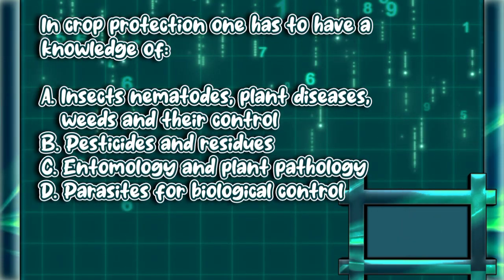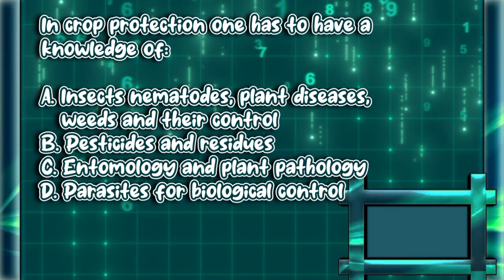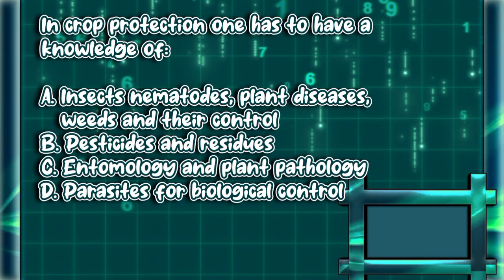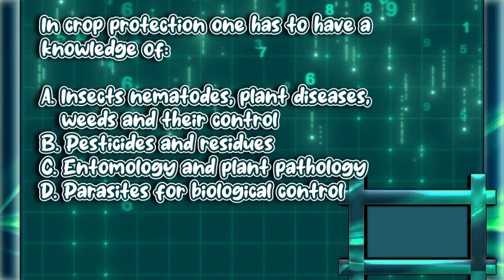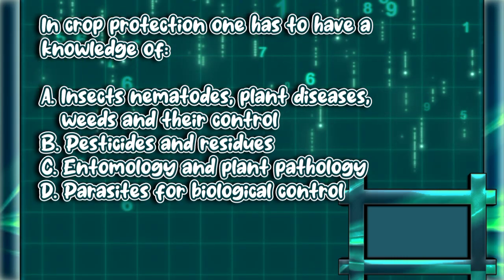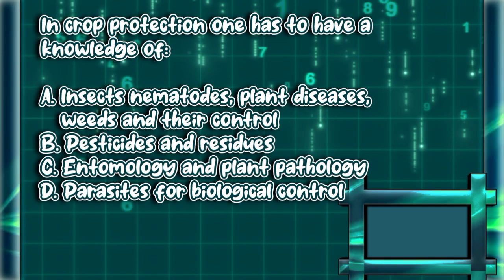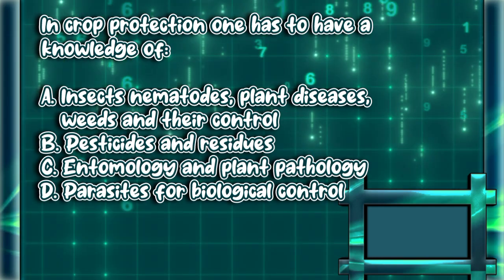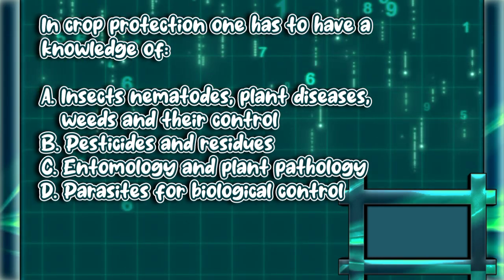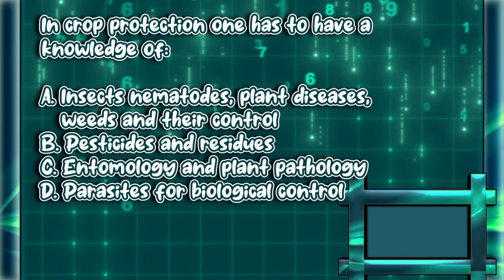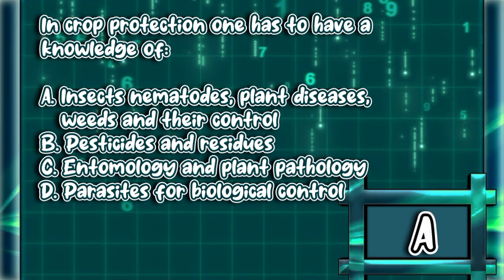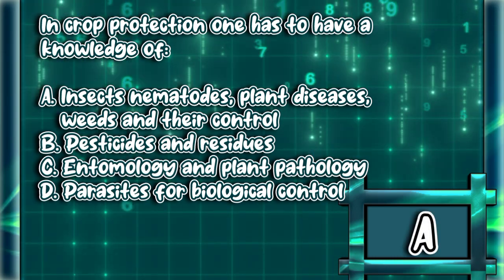In crop protection, one has to have knowledge of: A. Insects, nematodes, plant diseases, weeds and their control. B. Pesticides and residues. C. Entomology and plant pathology. D. Parasites for biological control. The answer is letter A.